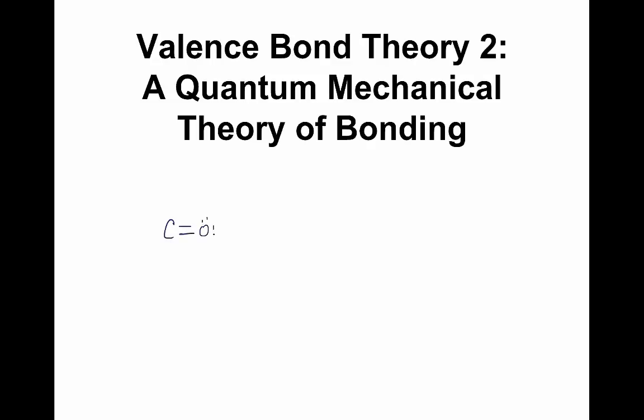In some molecules, like carbon dioxide for example, we have a double bond. So far what we know about valence bond theory is that we need an unpaired electron in an orbital on an atom, and that's going to overlap with an orbital on a neighboring atom that also has an unpaired electron. That might account for one of these bonds, but what about the other? Extending valence bond theory, we're going to need another set of orbitals that overlap — two different kinds of overlap, one for each bond.